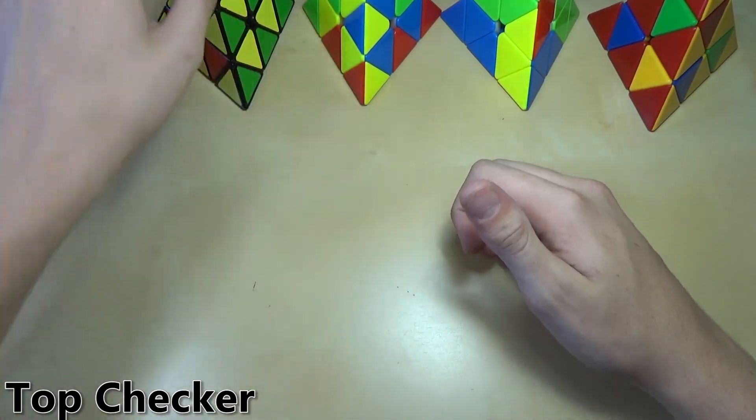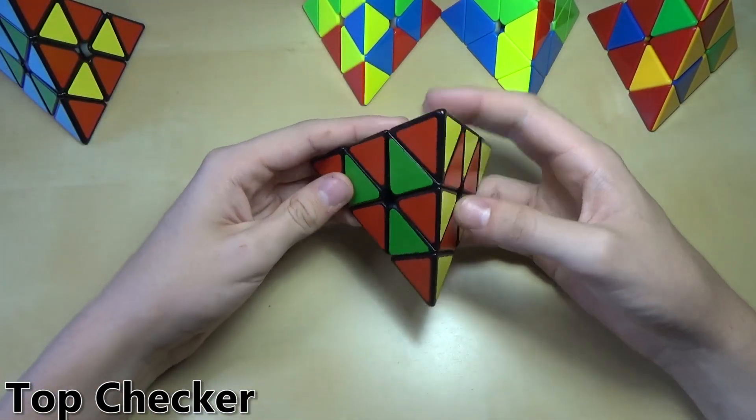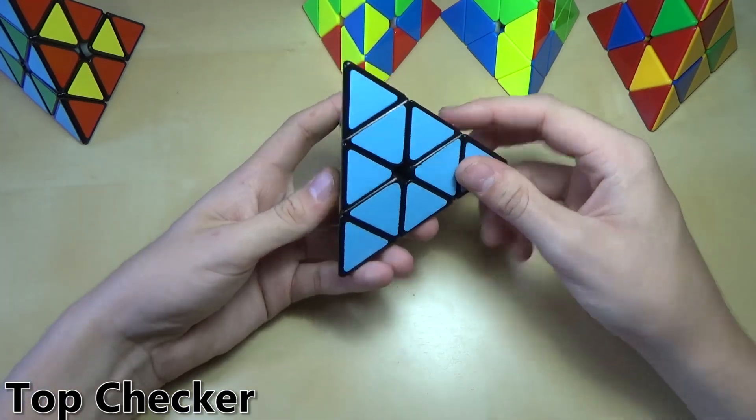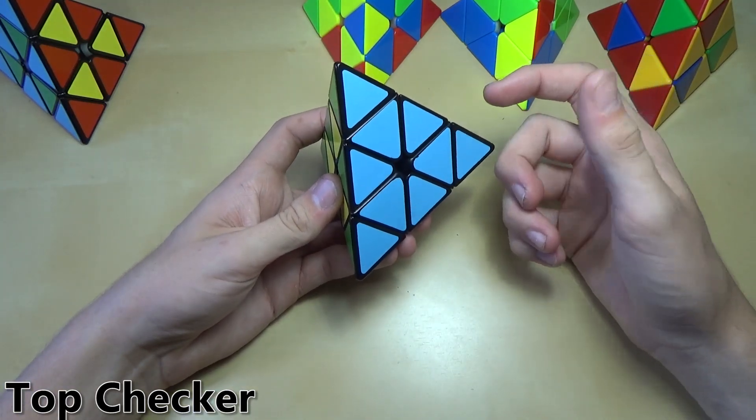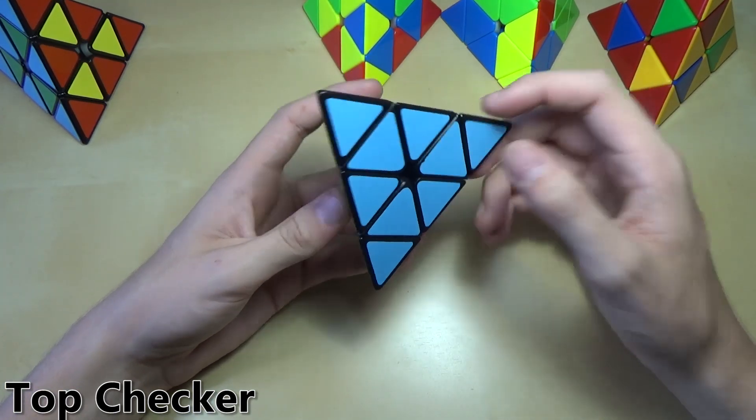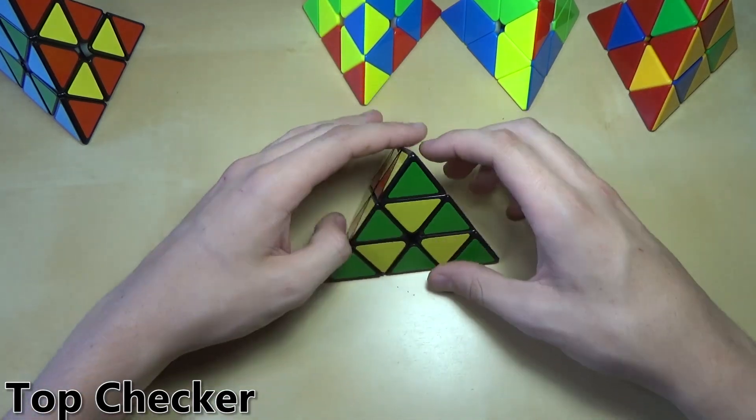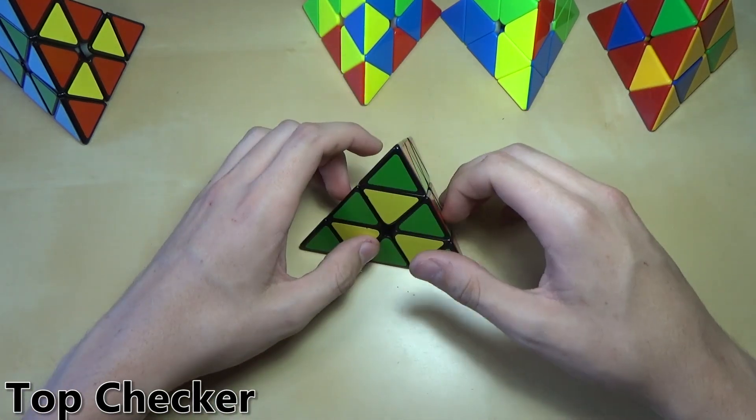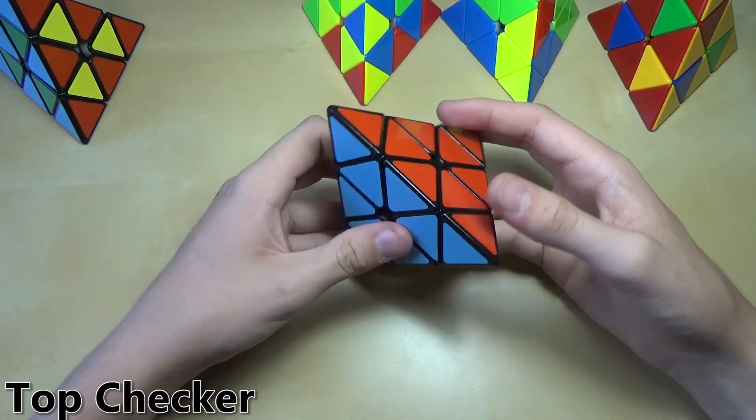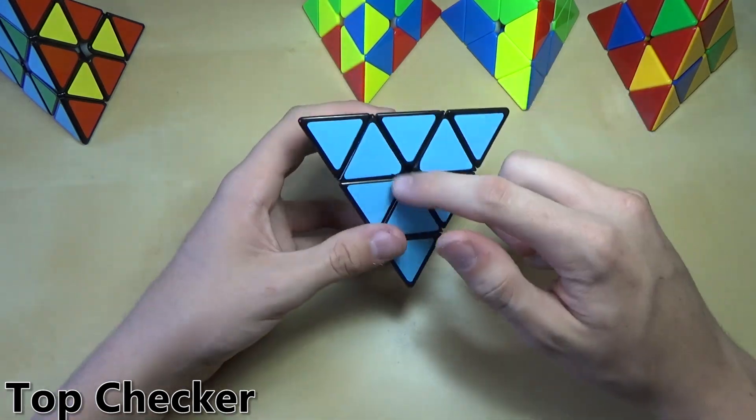The next pattern is an alternate checker pattern. You see here, it has these three colors are checkered, and this color is just all alone on the bottom. If you don't like a particular color on your Pyraminx, in this case blue, you can just hide that on the bottom and just checker these three colors.